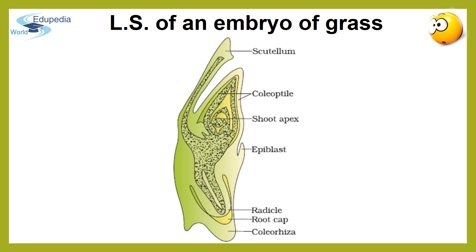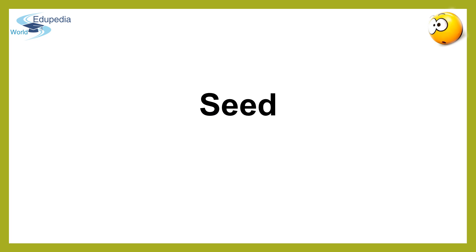After discussing the dicot embryo, let's move on to the structure of a monocot embryo. Unlike dicot embryos, monocot embryos contain only one cotyledon. In the grass family, the cotyledon is called the scutellum and is located laterally to the embryonal axis. At its lower end, the embryonal axis has the radicle and root cap enclosed in an undifferentiated sheath called the coleorhiza. The portion of the embryonal axis above the level of attachment of the scutellum is called the epicotyl. The epicotyl has a shoot apex and a few leaf primordia enclosed in a hollow leaf-like structure called the coleoptile.